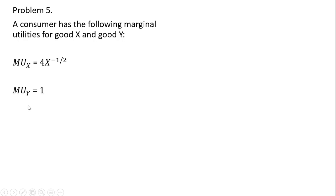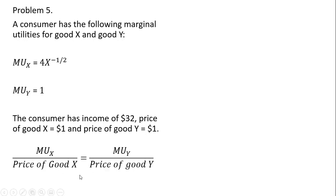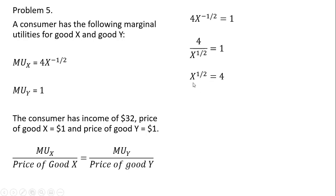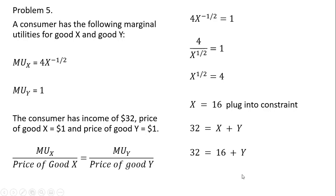Problem five. The consumer has given marginal utilities for goods x and y. Setting up the utility maximizing condition and substituting, with the price of good x equal to 1 and the price of good y equal to 1. Using rules of exponents, moving x to the negative one-half power into the denominator, multiplying through by x to the one-half, and squaring both sides to eliminate the exponent, we get x equals 16. Plugging into the budget constraint — which is just x plus y — gives y equals 16.